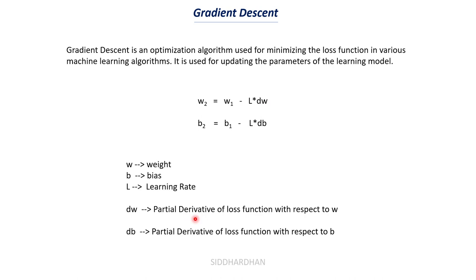dw is the partial derivative of the loss function with respect to w — or in other words, for a change in weight value, we find how much the loss function changes. Similarly, db tells us for a change in bias, how much the loss function changes — which is differential calculus. We do this continuously to reach the global minimum, minimizing the loss function and increasing model accuracy.